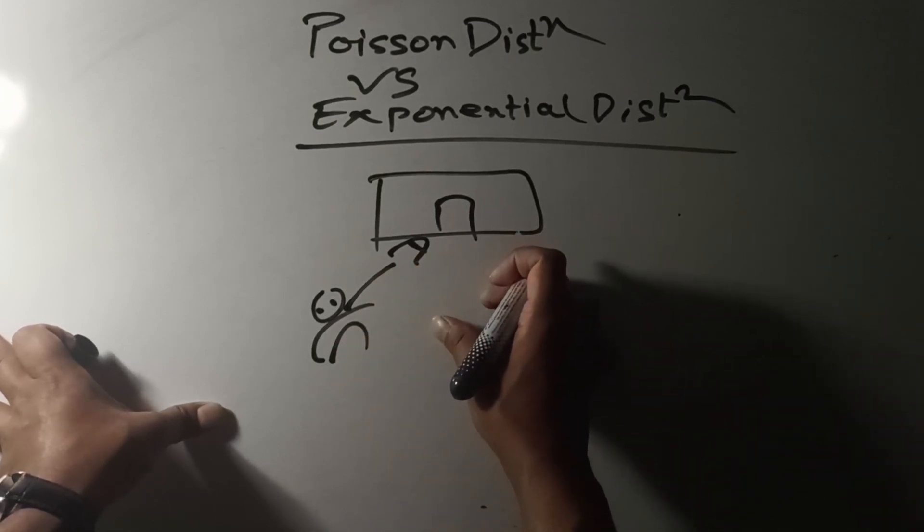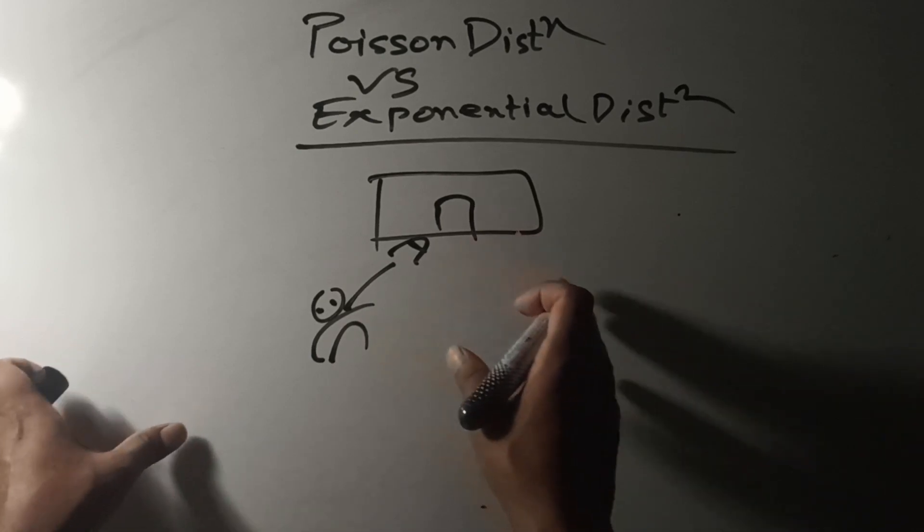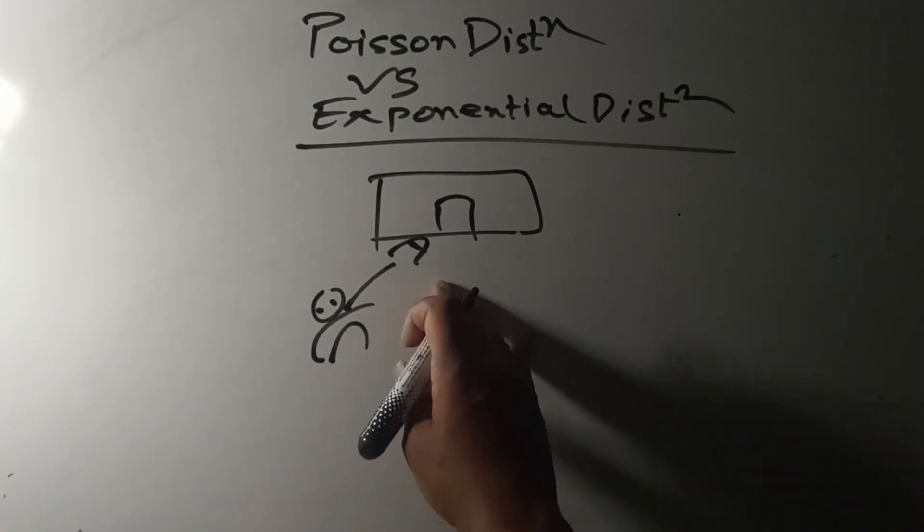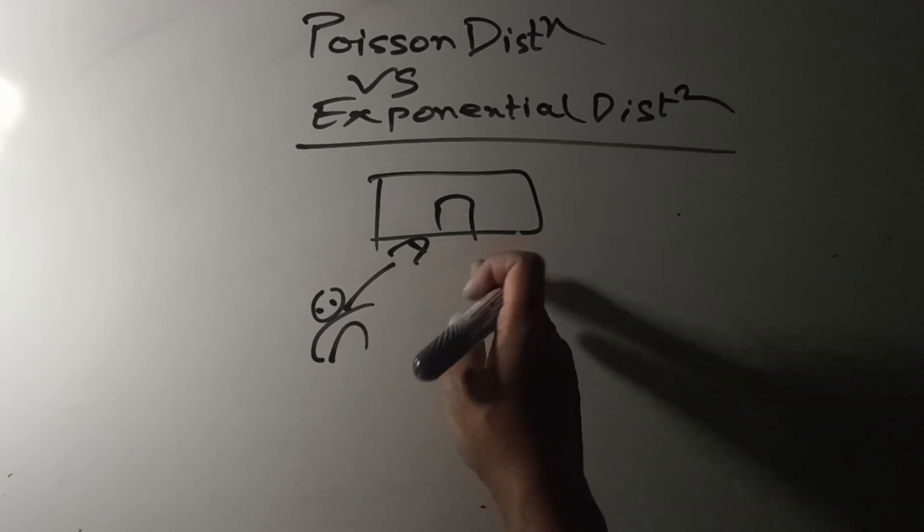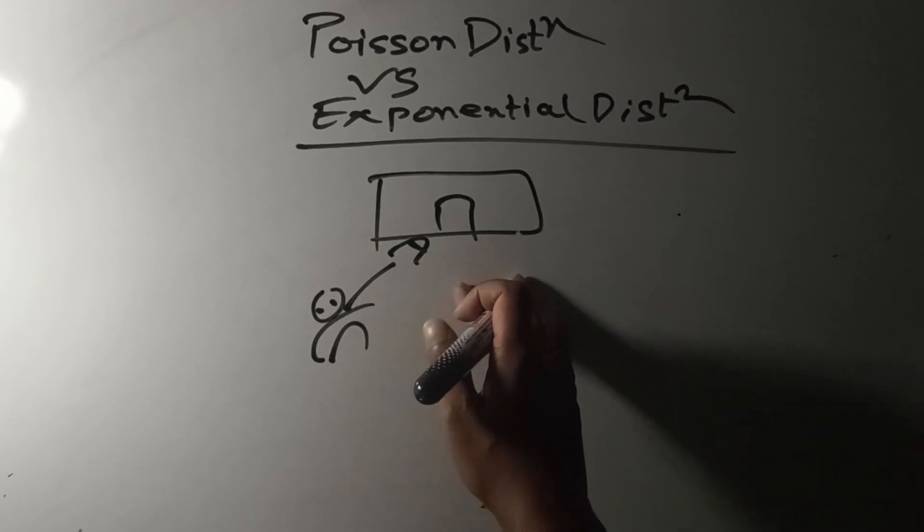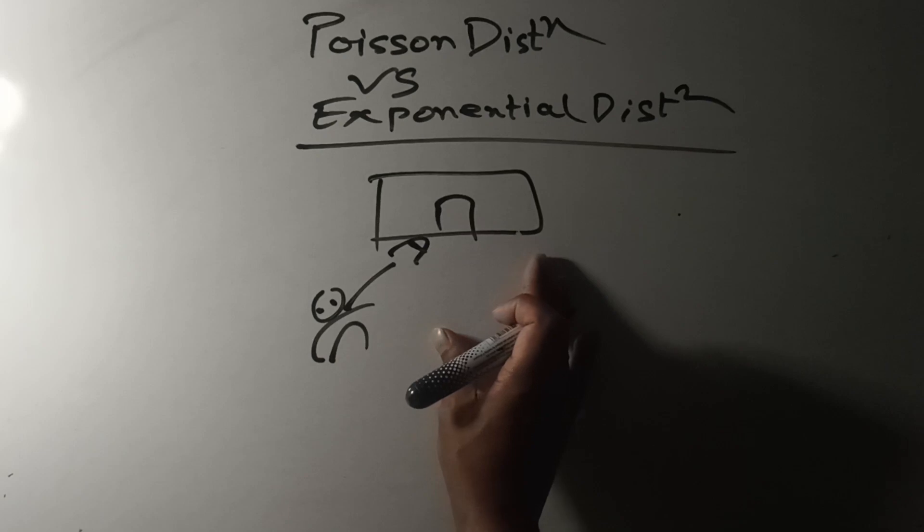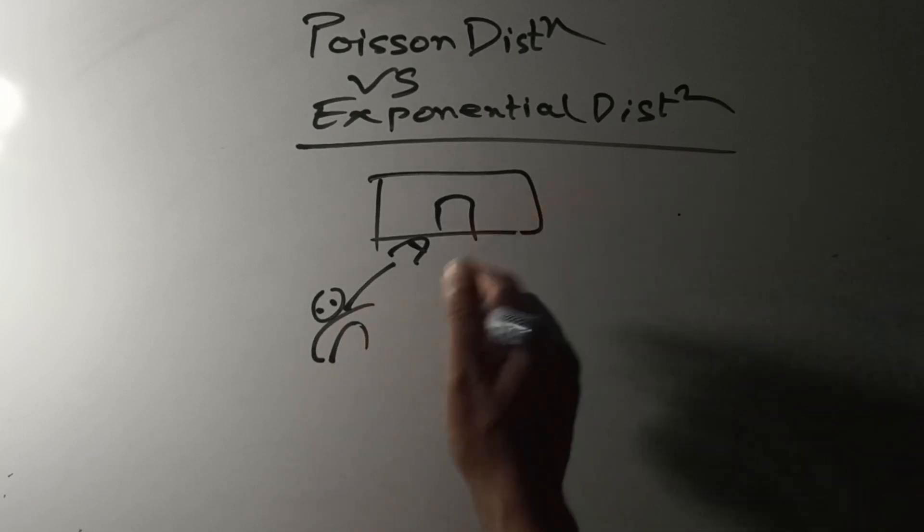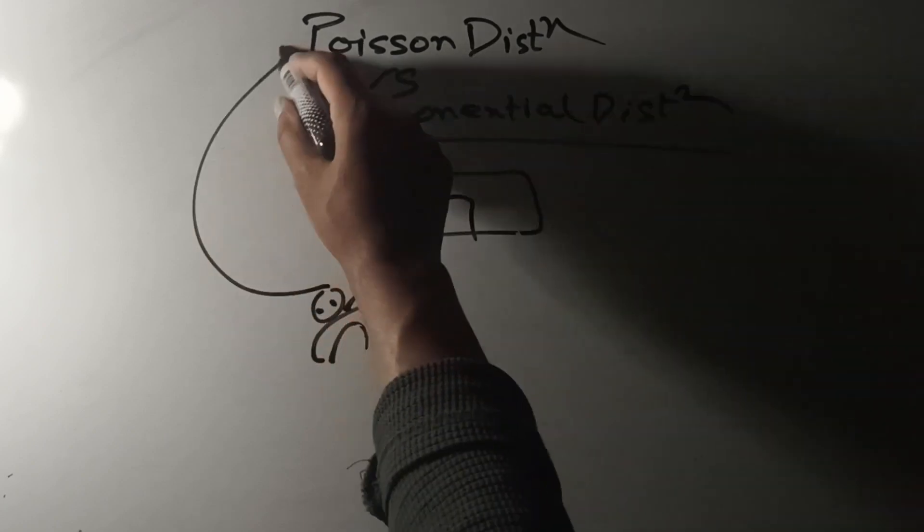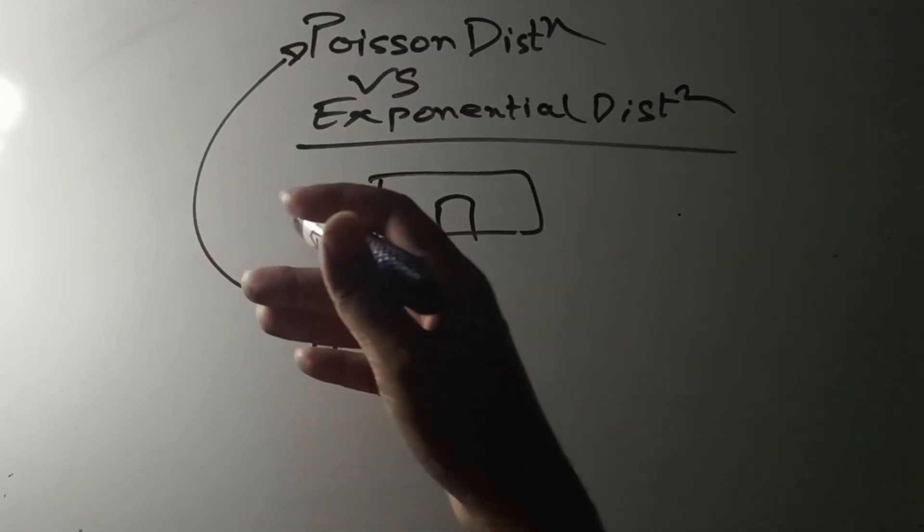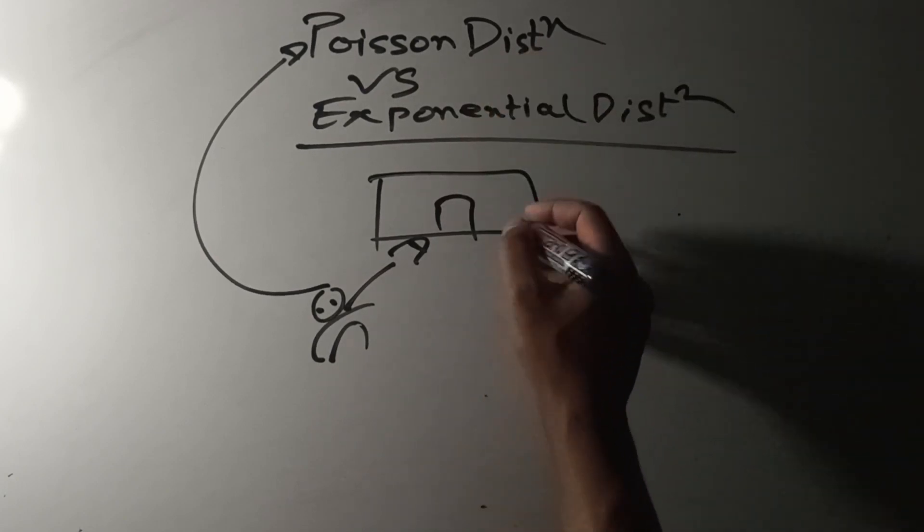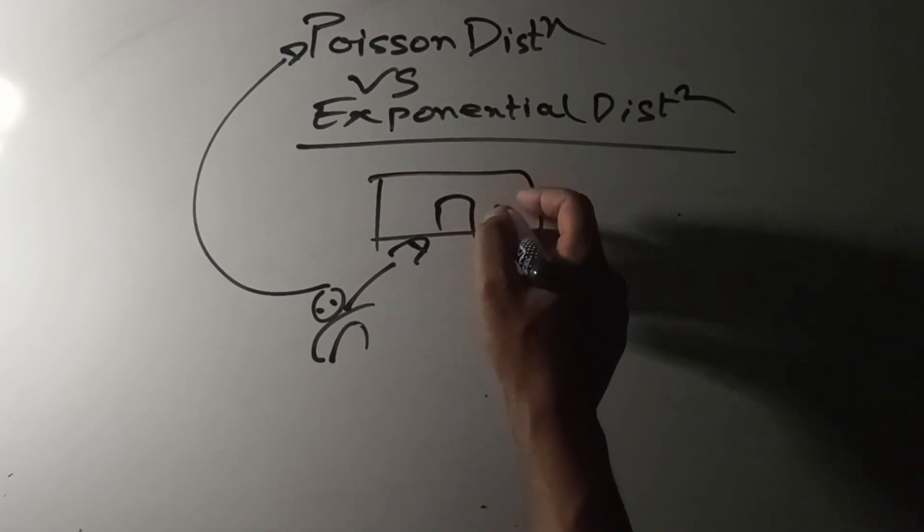the customer's arrival is not fixed and does not follow any patterns. Customers arrive at different times in different situations, so these are discrete events. The discrete events of customer arrivals in a supermarket follow Poisson distribution.